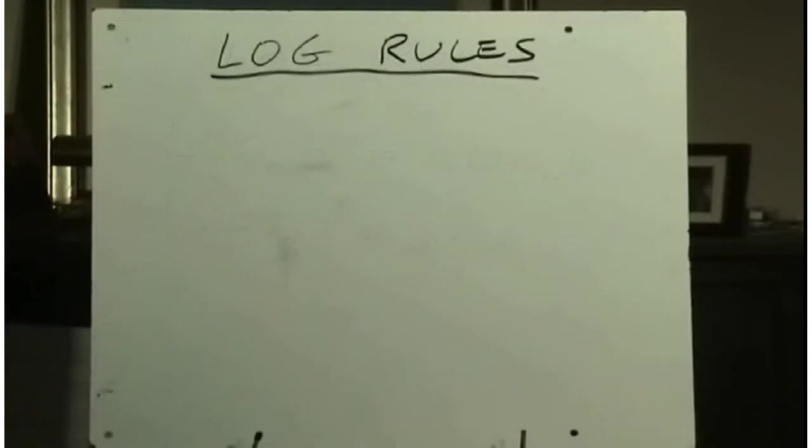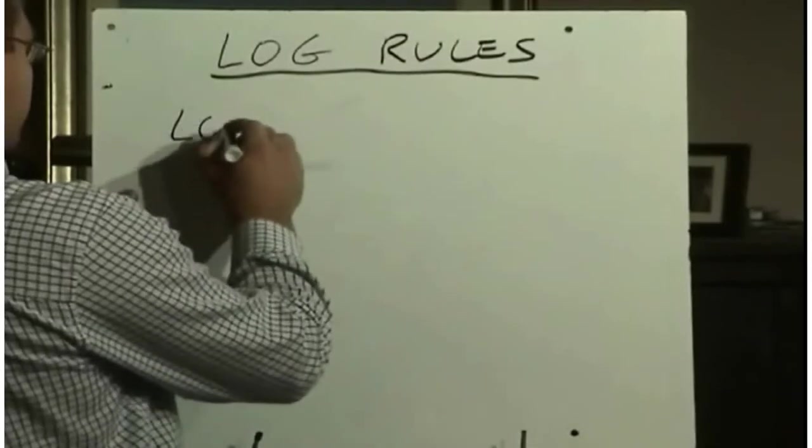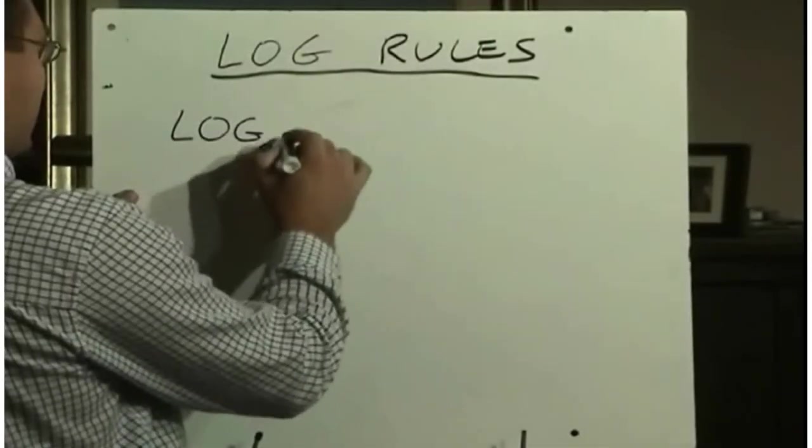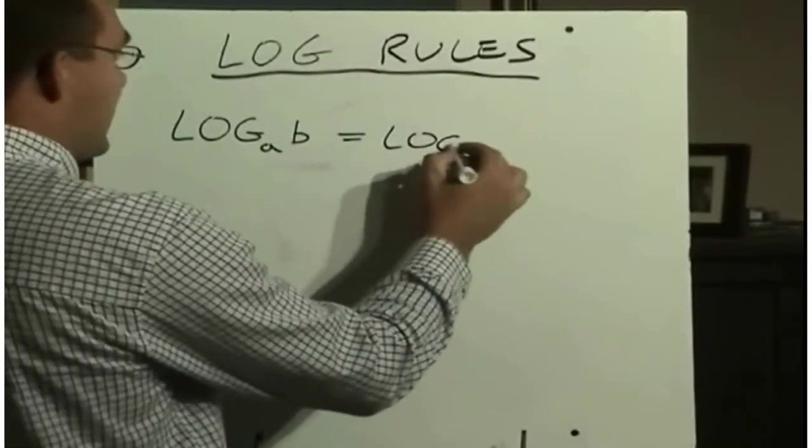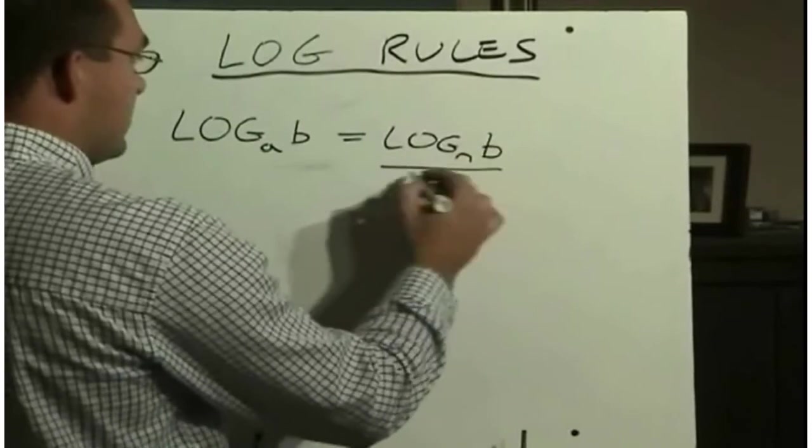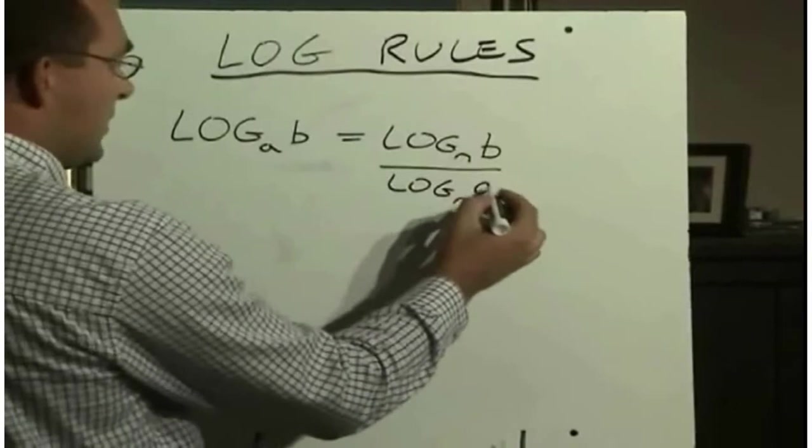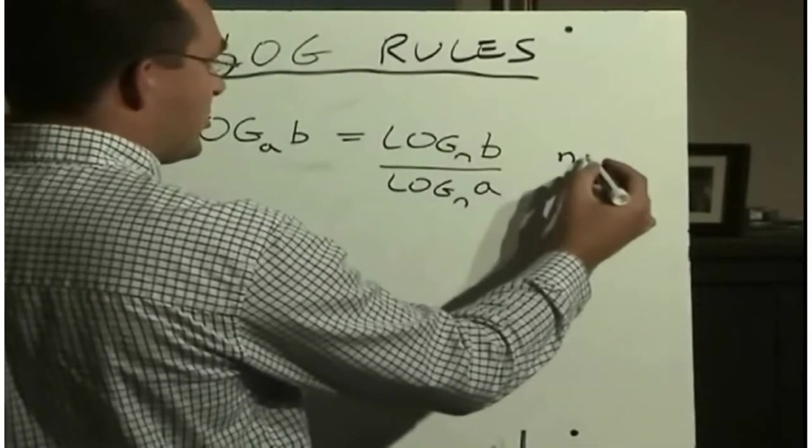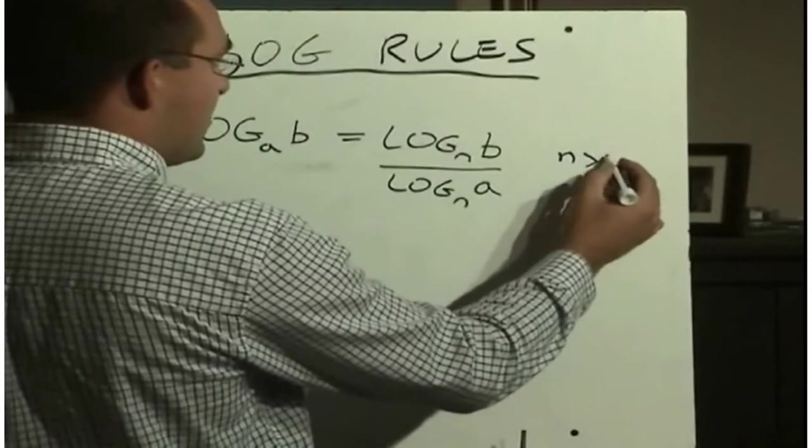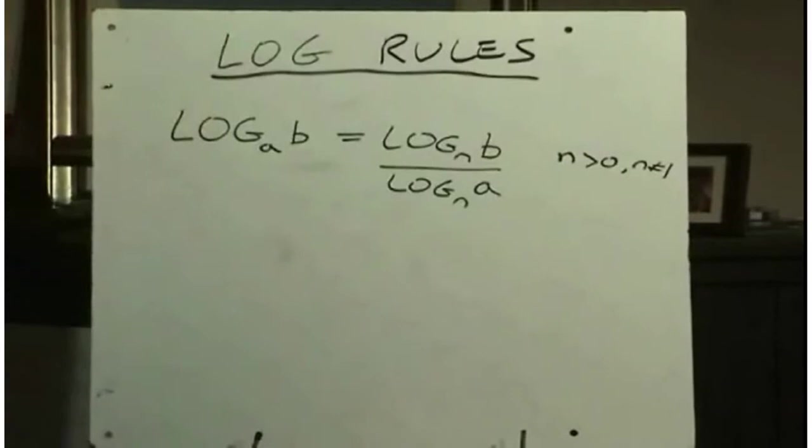Another rule is the change of base rule. Change of base rule says this, that if we have log base a of b, that this can equal log base n of b divided by log base n of a, and as long as your n, here's your restrictions, n has got to be greater than 0, and n cannot equal 1. So your base can be whatever you like, as long as it's positive and not 1.